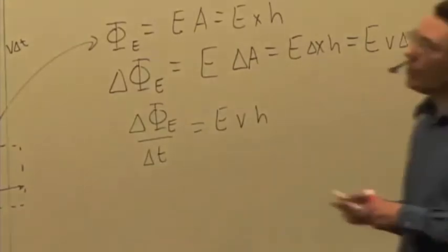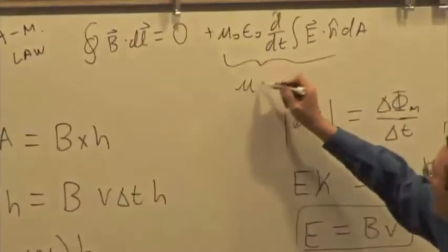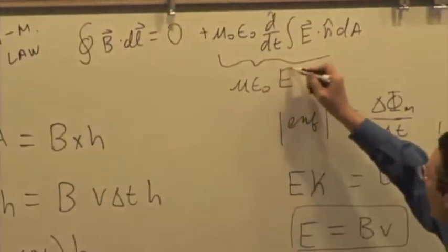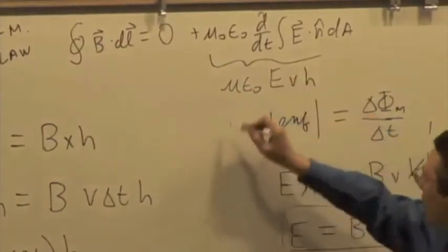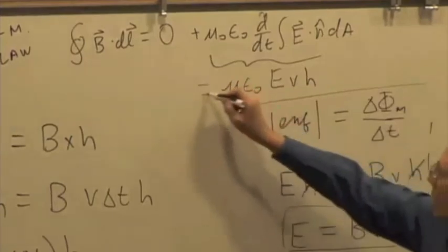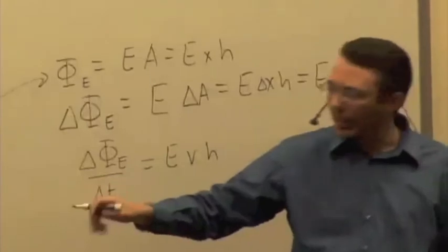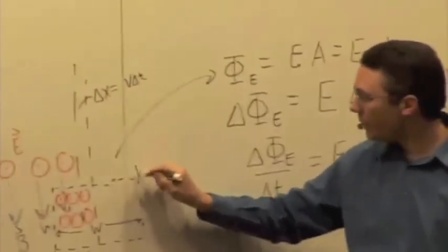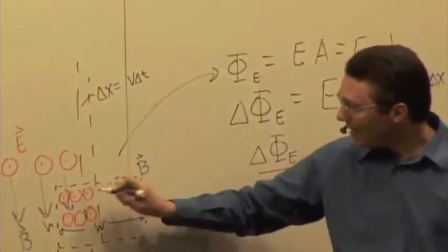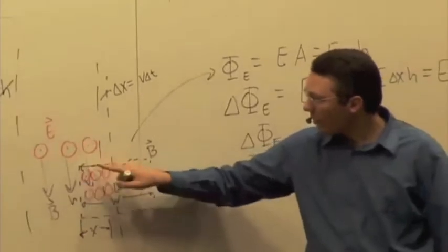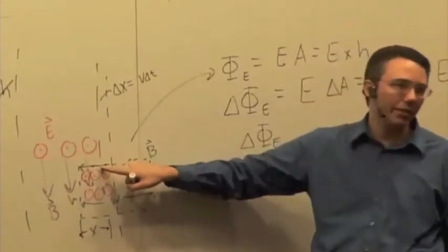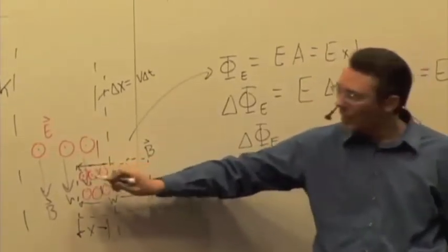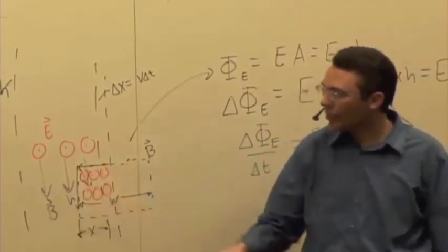So on this side of the equation, I get mu naught epsilon naught E V H. On the other side of the equation, I have B dot delta L, and I do the exact same type of path integral again. Out here, the magnetic field is equal to zero. Along this part of the path, the magnetic field is perpendicular to the path, so I get zero. Then I go downward, and that's going to contribute what?